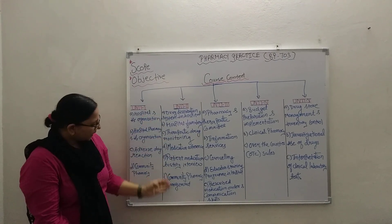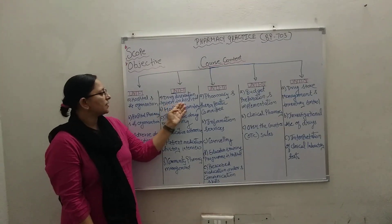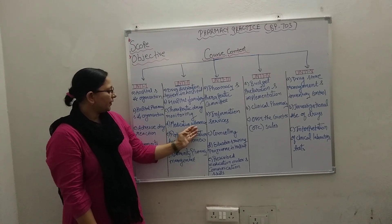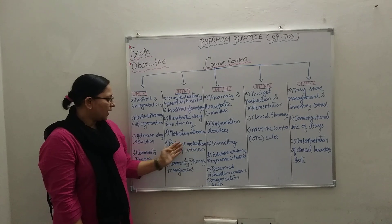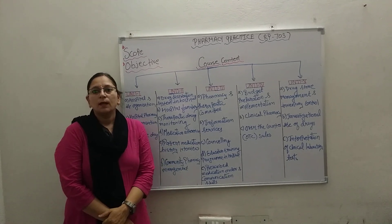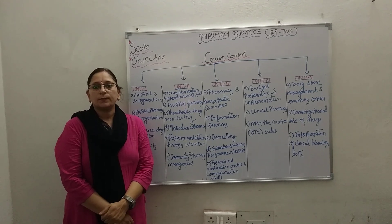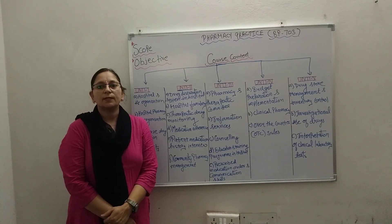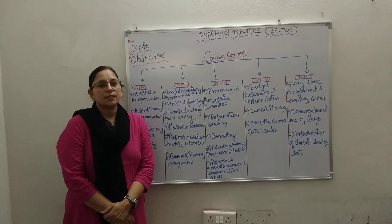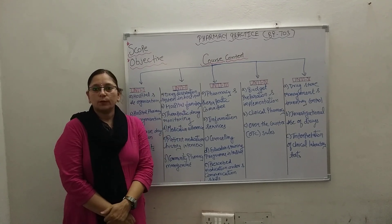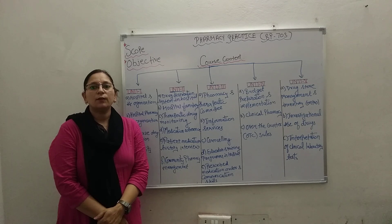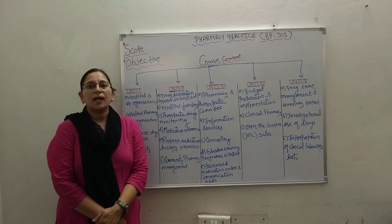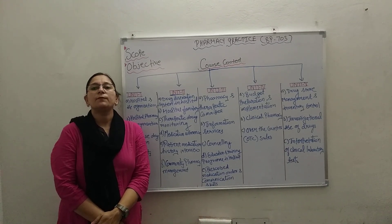Unit 2 is divided into 6 parts. The first is drug distribution systems in hospitals, covering dispensing of drugs to inpatients, ambulatory patients, dispensing of controlled drugs, and types of drug distribution systems. The second is hospital formulary, including its definition, content, differentiation of hospital formulary from a drug list, preparation and revision, and addition and deletion of drugs from the hospital formulary.